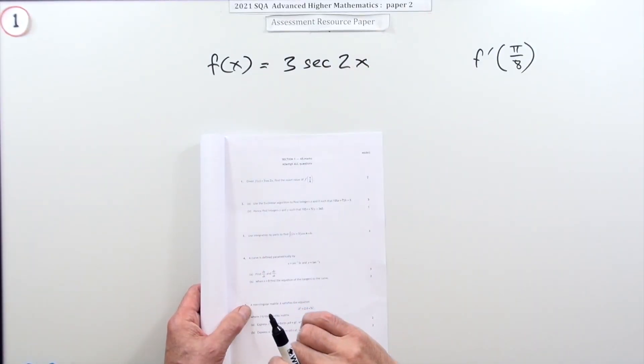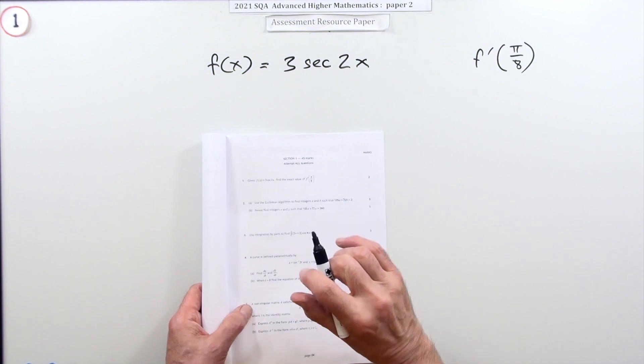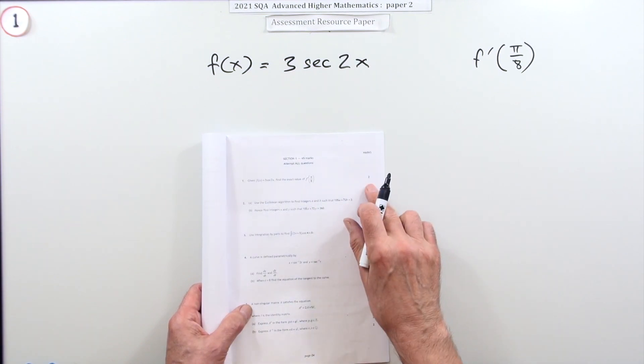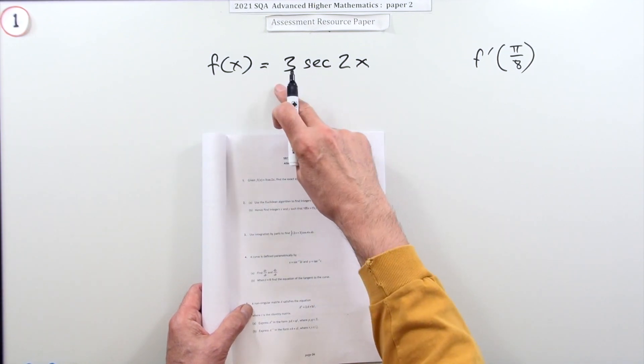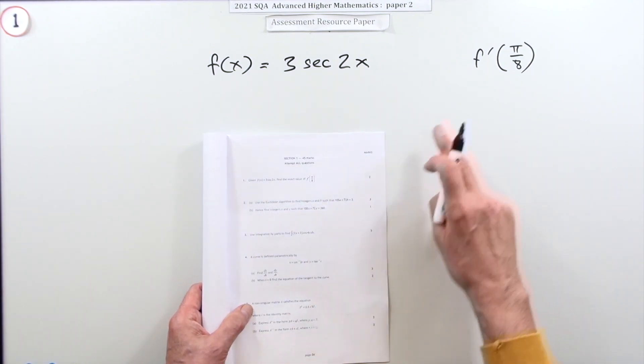Question one from paper two of the 2021 Advanced Higher Maths resource paper. A two mark question: differentiate and evaluate. Given that f(x) = 3 sec 2x, find the value of the derivative at π/8.